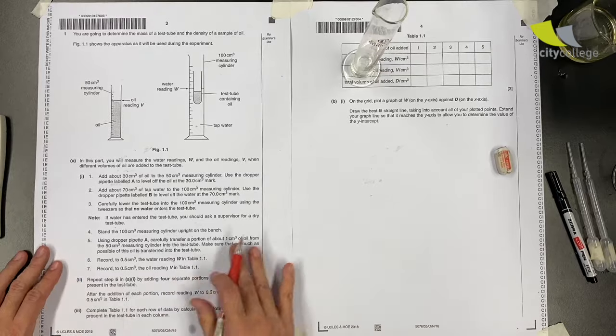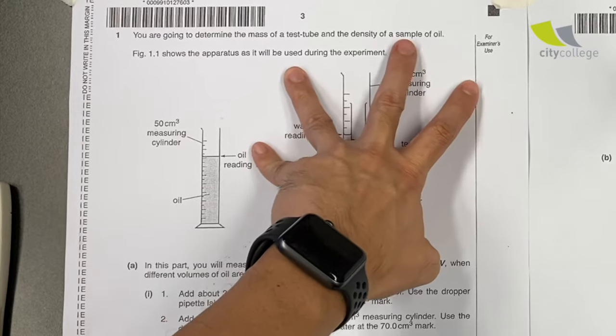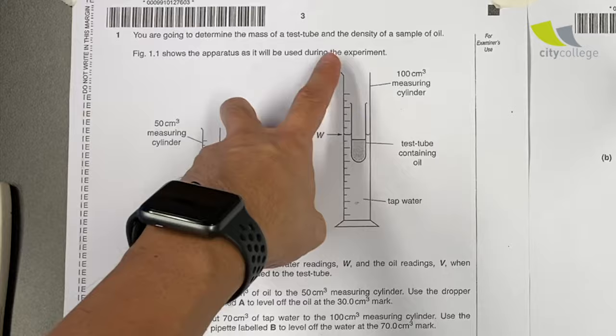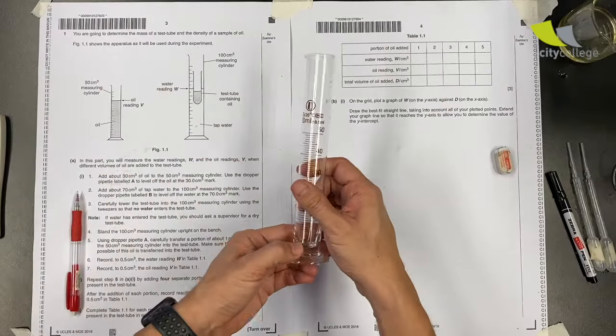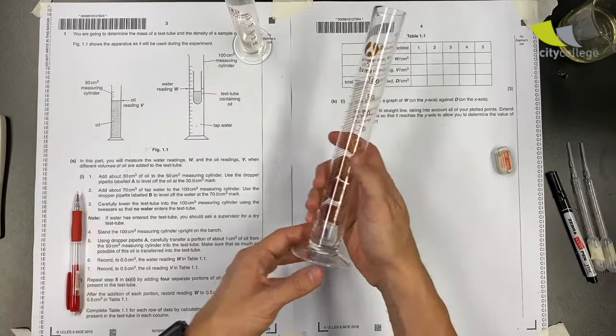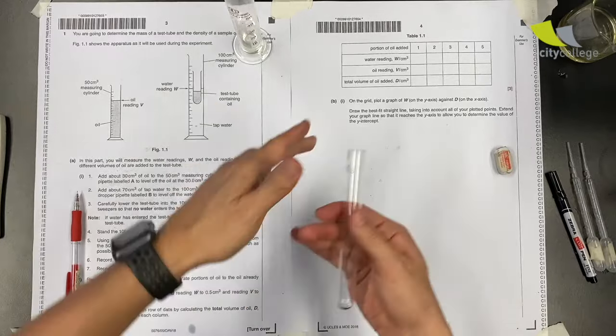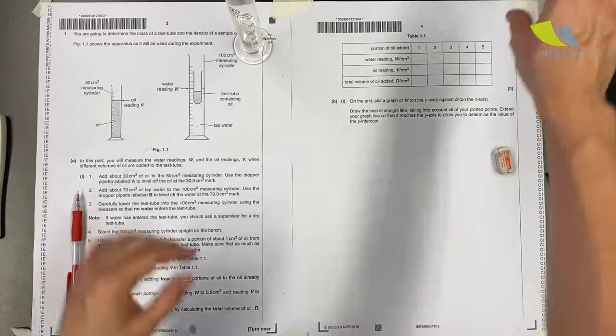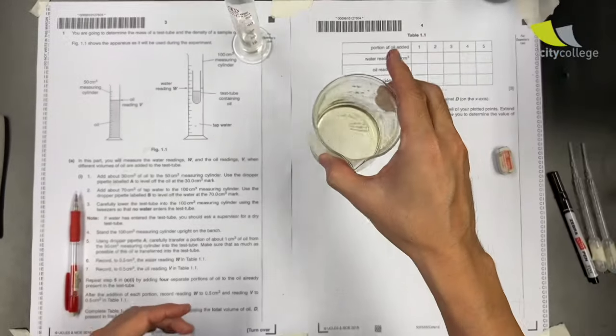Okay, let's try this 2018 paper. You are going to determine the mass of a test tube and the density of a sample of oil. Figure 1.1 shows the apparatus that will be used during the experiment. I'm supposed to have tap water over here and oil over here.